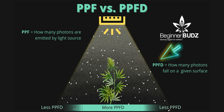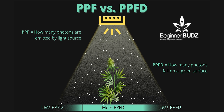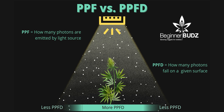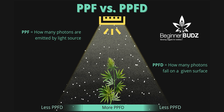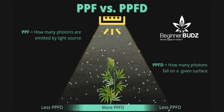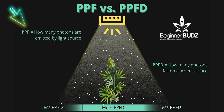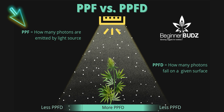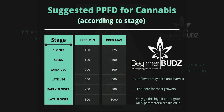PPFD, or Photosynthetic Photon Flux Density, is the amount of light photons that hit a given surface — usually the plant's canopy — in one second. This number is measured in units called micromoles. Although PPF and PPFD are commonly used interchangeably, what we're really after here is the PPFD. While PPFD is the amount of photons that fall on a certain area, PPF — or Photosynthetic Photon Flux — is the entire amount of photons released by the light source. We don't care about that. We care about how much light is hitting our plants. The higher we can get the PPFD while keeping the plant healthy, the bigger the yield. But it has its limits.